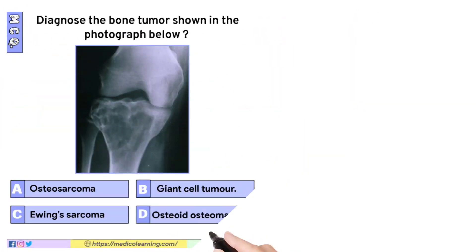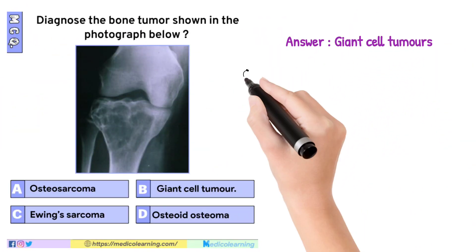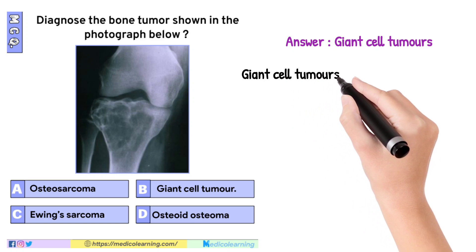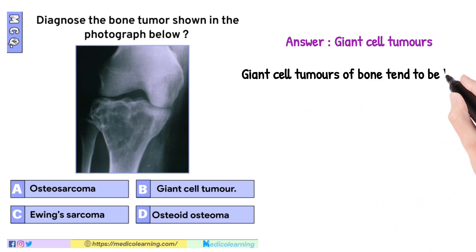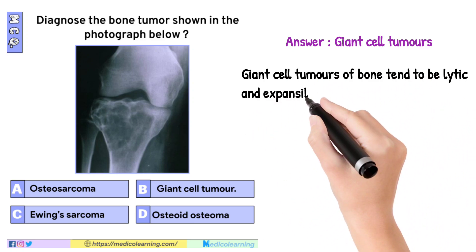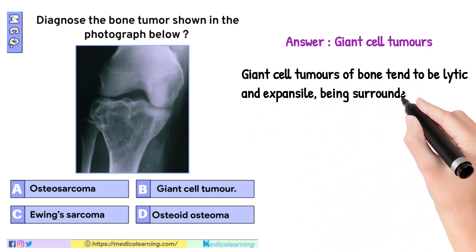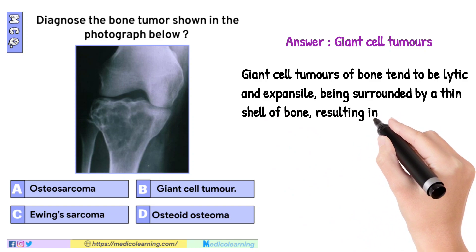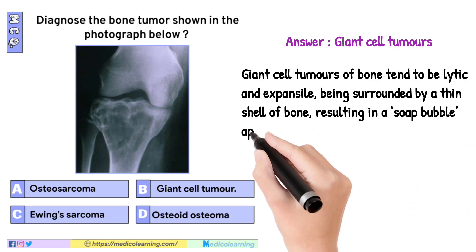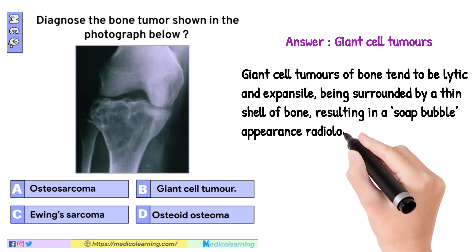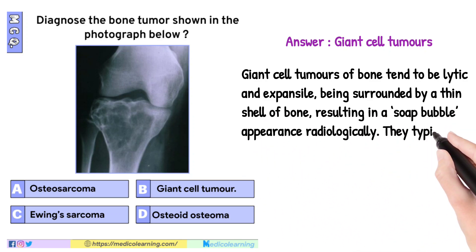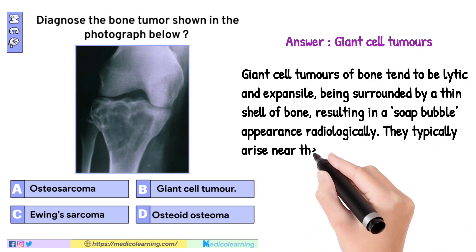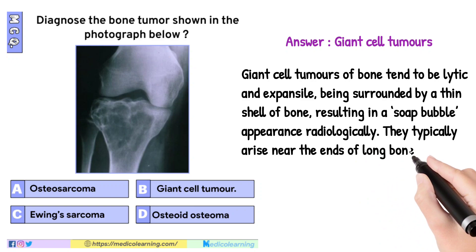In this question the answer is Giant cell tumors. Giant cell tumors of bone tend to be lytic and expansile, being surrounded by a thin shell of bone, resulting in a soap bubble appearance radiologically. They typically arise near the ends of long bones.